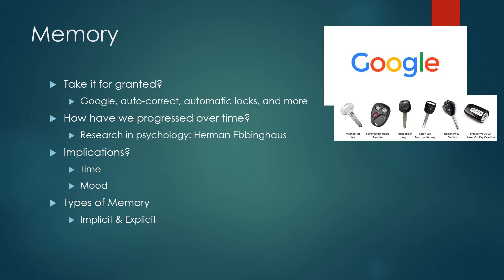He also explained different types of memory, which are implicit, which is involuntary recall, and explicit, which is voluntary recall.